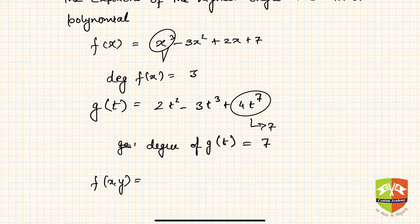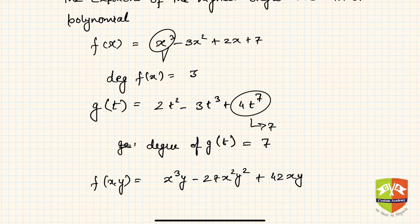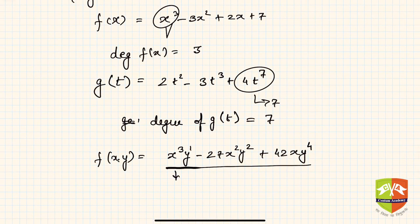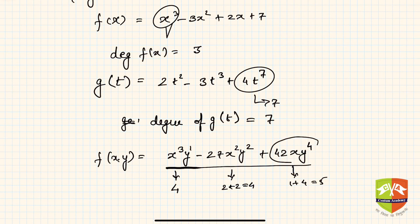For a polynomial in multiple variables, such as f(x, y) = x³y − 27x²y² + 42xy⁴, the degree of each term is found by summing the exponents. The first term x³y has degree 1+3=4, the second x²y² has degree 2+2=4, and the third xy⁴ has degree 1+4=5. The highest degree is 5, so the degree of this polynomial is 5.